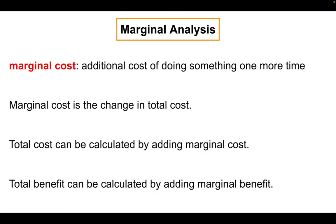For marginal cost, this is the additional cost of doing something one more time. Marginal cost is therefore the change in total cost. Economists say don't just think about what you gain when you do something one more time, but also think about what you lose. This idea of marginal cost is going to be very important later in the course when we get to firm theory and how much output a firm should produce. Just like total benefit, total cost can be calculated by adding marginal costs.